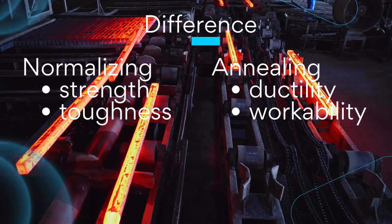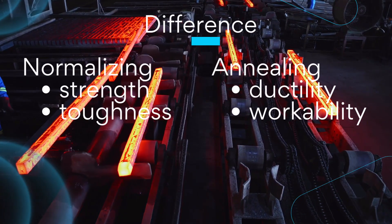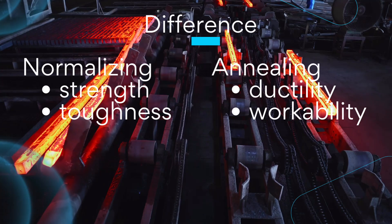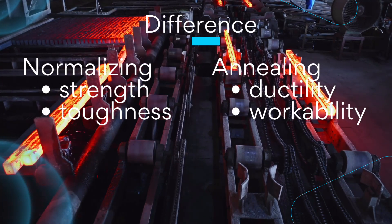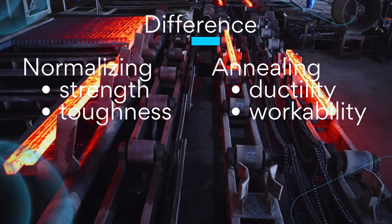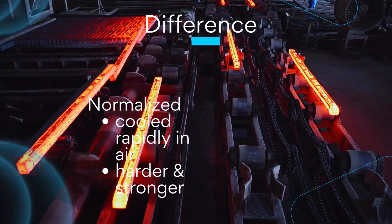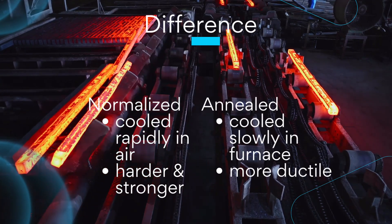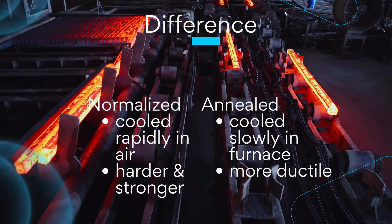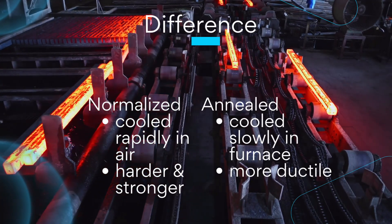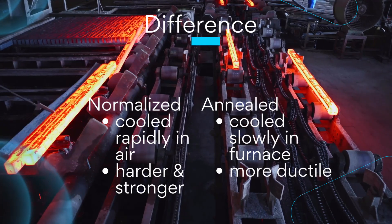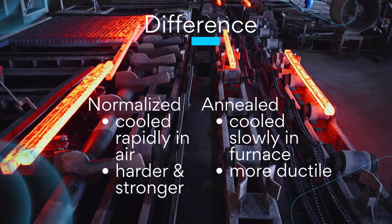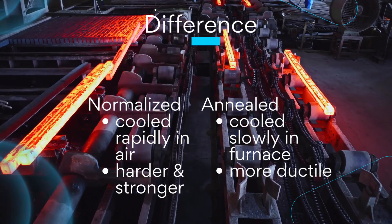On one hand, normalizing aims to improve strength and toughness, while annealing aims to improve ductility and workability. To summarize, normalized steel is cooled rapidly in air, while annealed steel is cooled slowly in a furnace. Normalized steel is generally harder and stronger, while annealed steel is more ductile.